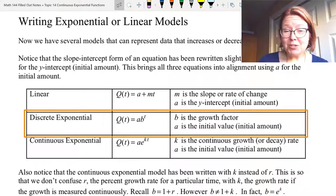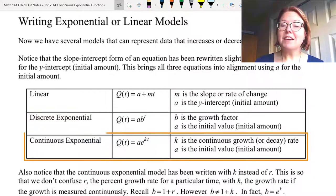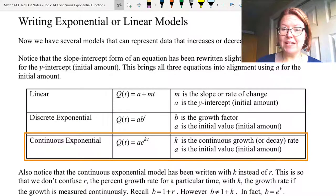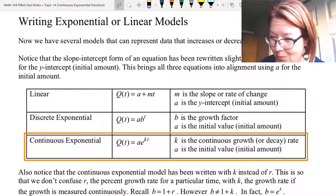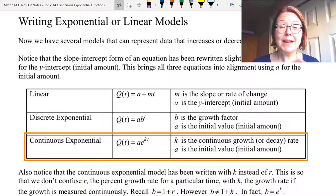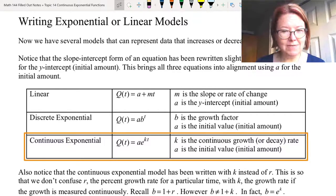The discrete exponential model is Q(t) equals lowercase a times lowercase b raised to the t power. The continuous exponential model is Q(t) equals ae to the kt. It's just the e that's raised to the kt power. That lowercase k is the continuous growth or decay rate. So b is a growth factor, that's one plus or minus the rate. K is the continuous growth rate. There's no one plus involved in that one.